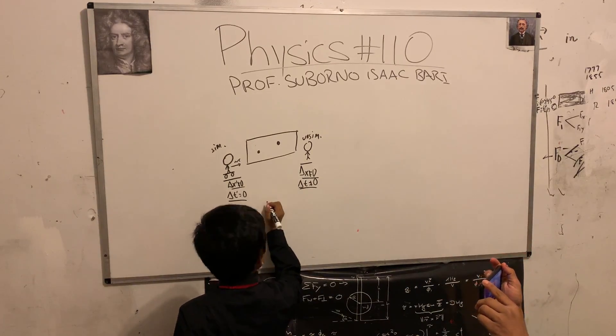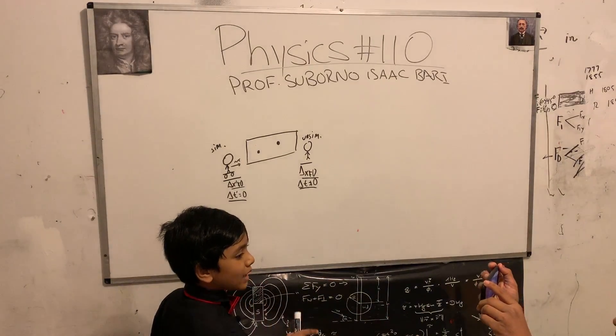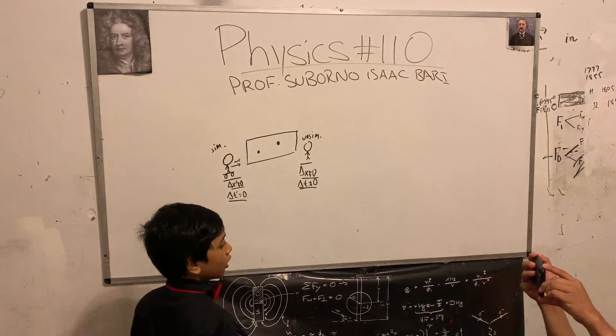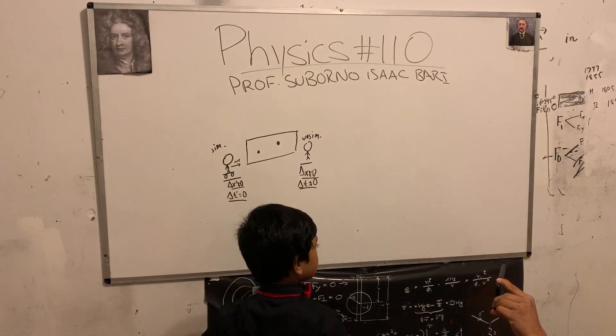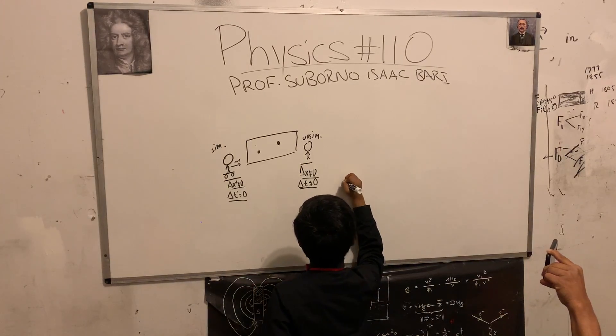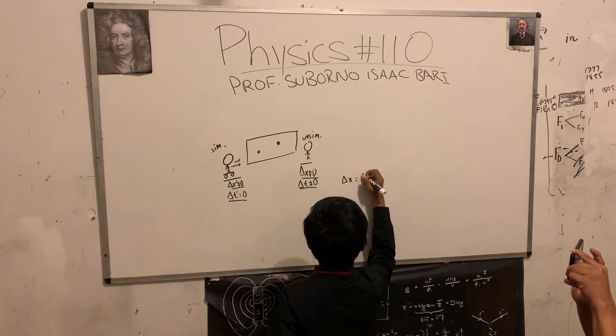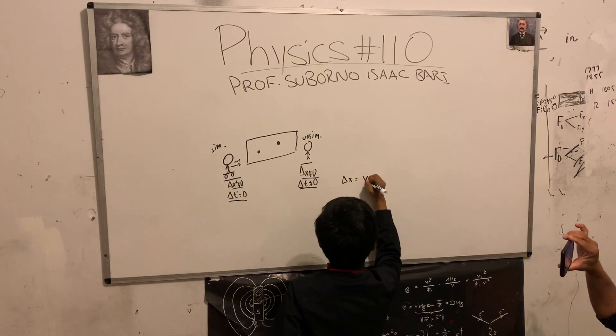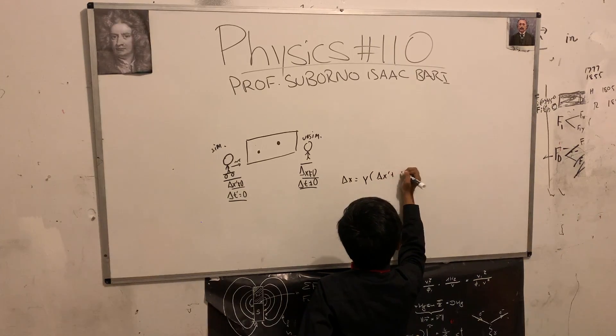So as a recap from last time, we took the Lorentz equation - specifically these ones. Delta x is equal to gamma times delta x prime plus v delta t prime.